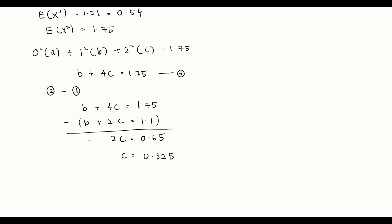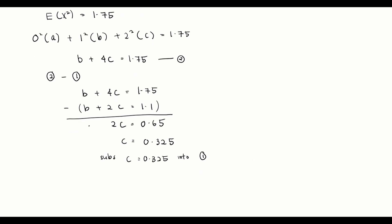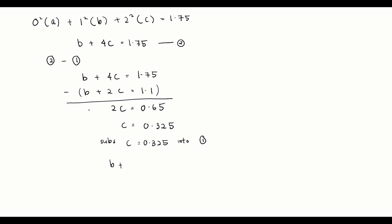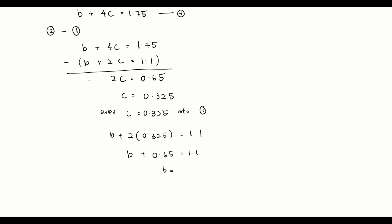Now that we have c equals 0.325, we substitute it back into the first equation: b plus 2 times 0.325 equals 1.1, so b plus 0.65 equals 1.1, therefore b equals 0.45.